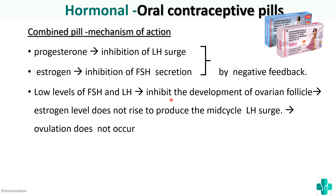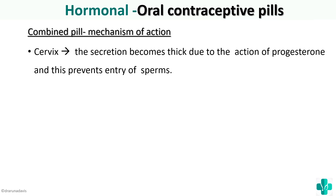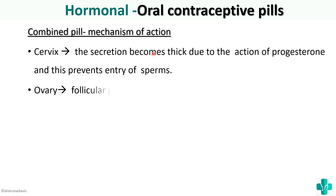That is the mechanism of action of the combined pill. Not only does ovulation not occur, there are many other secondary effects as well. In the cervix, the secretion becomes thick due to the action of progesterone, which in turn prevents the entry of sperms into the uterus.